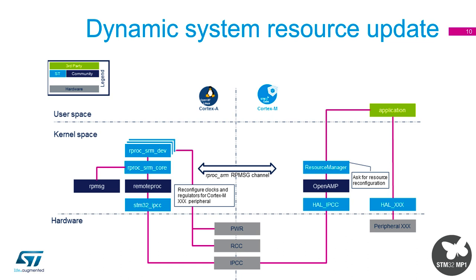The power change request goes through the standard messaging procedure between the two cores — OpenAMP and the IPCC — with a section of memory for parameters. On the A7 side, the IPCC receives the request and activates its remote proc procedure. The system resource manager then activates the changes and reconfigures the clocks and regulators for the Cortex M device. So there is a defined procedure for changing power settings, but you're not fixed — it just has a specific process.